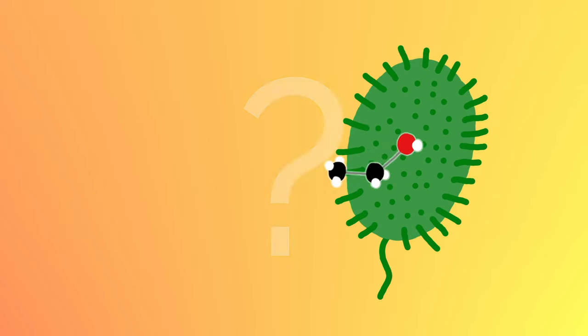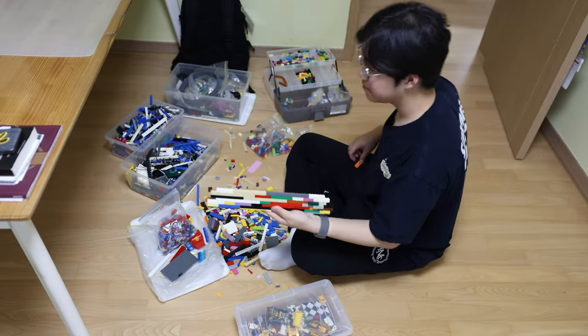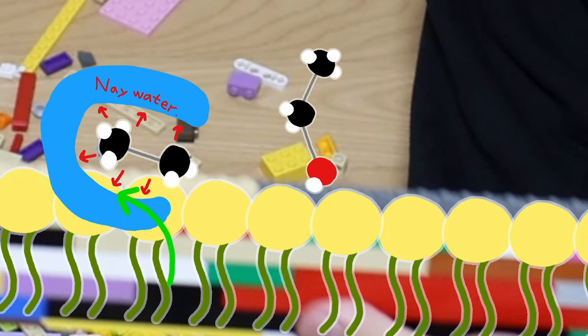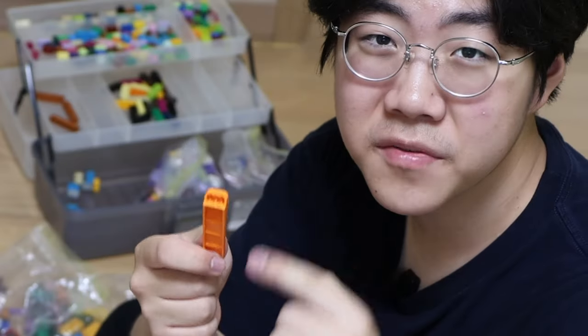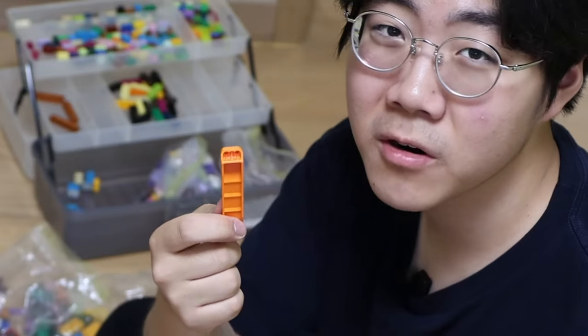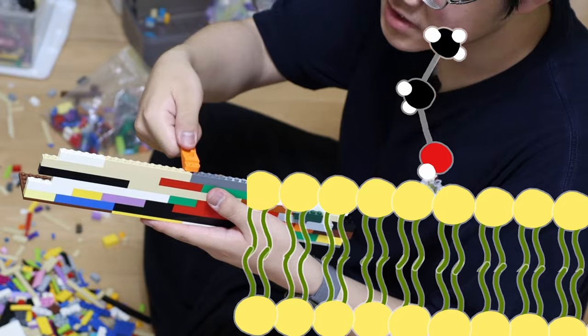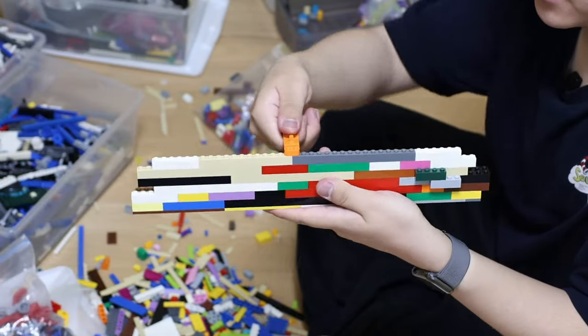But how does ethanol break down bacteria? Let's say this is the cell membrane of the bacteria. Ethanol first approaches near the cell membrane, also made of hydrophobic and hydrophilic ends. Ethanol uses a hydroxyl group — or this brick part of the brick separator — to make a new hydrogen bond with the hydrophilic ends of the membrane, and pull them out to create a new gap.